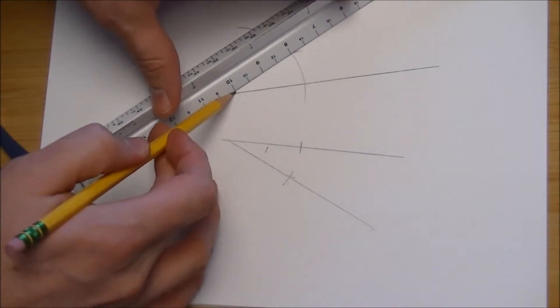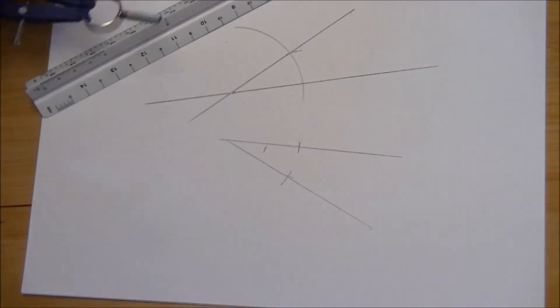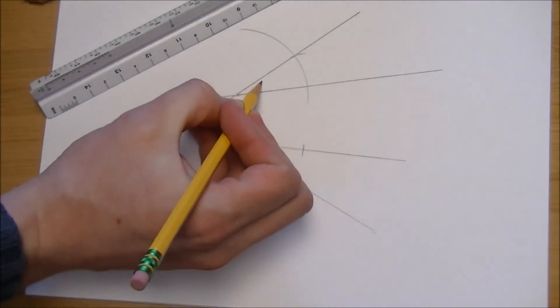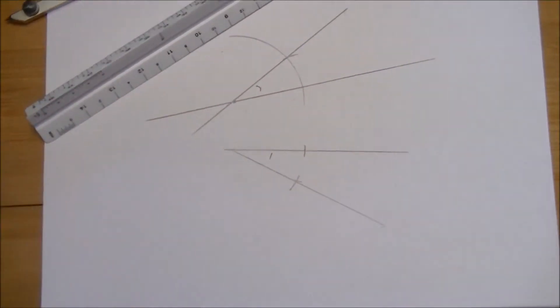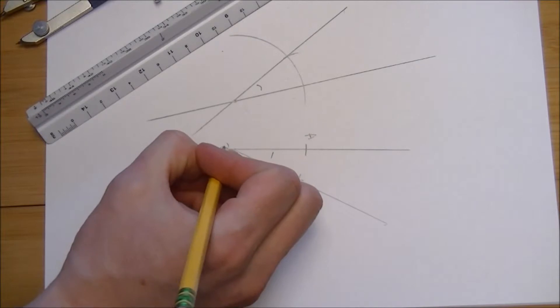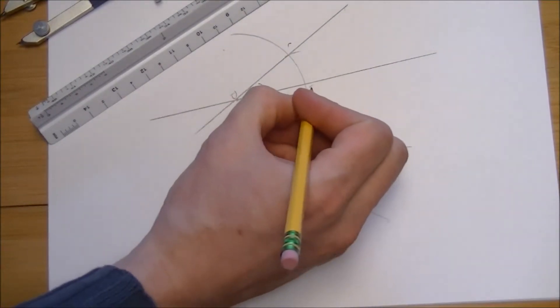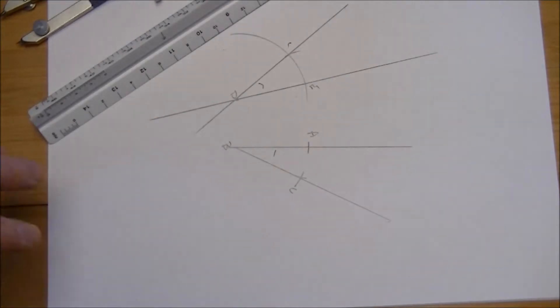I use my vertex here and the intersection of the points I made right there. And I've created here a congruent angle to our initial angle. So if this is angle ABC, then angle CDE is congruent to ABC.